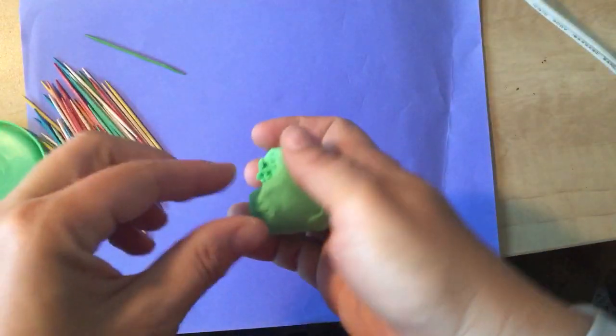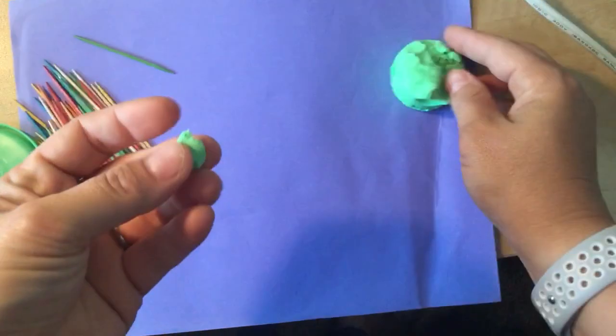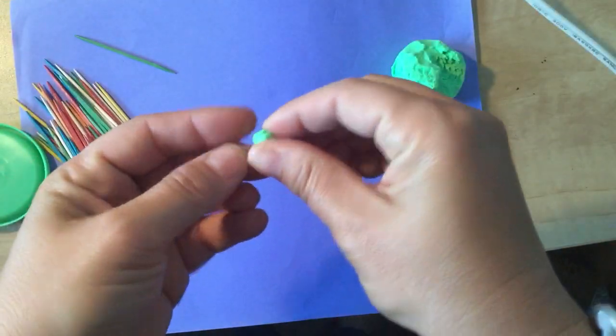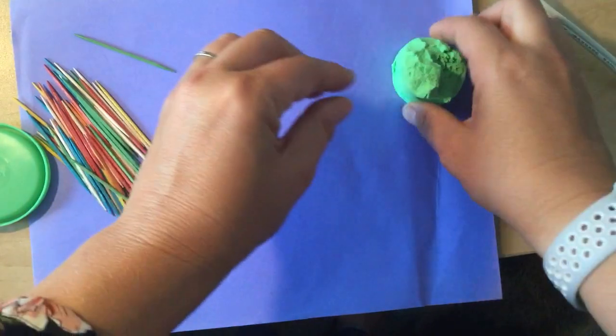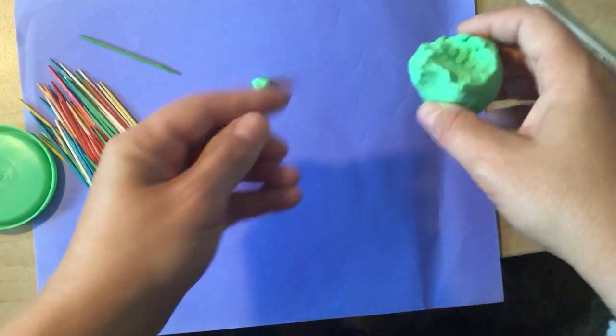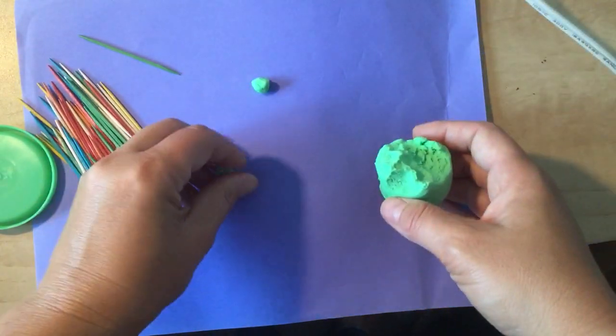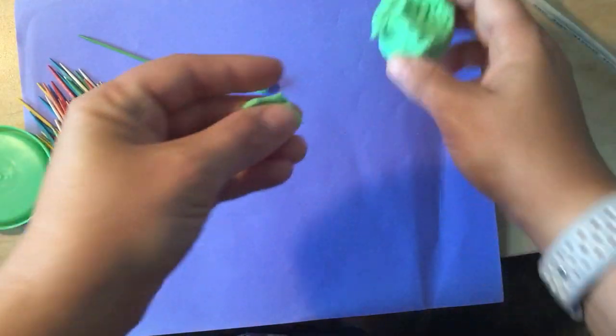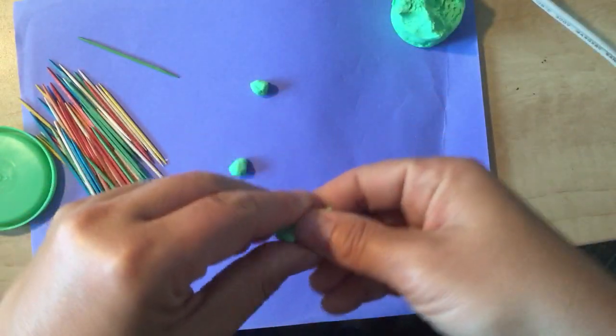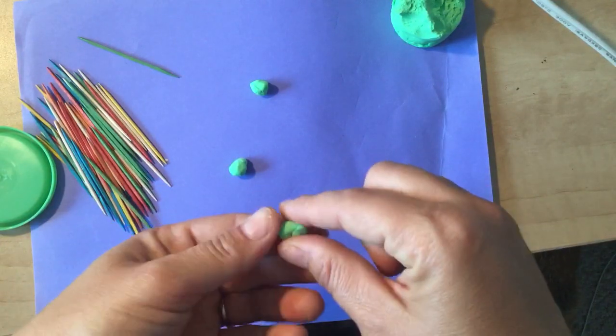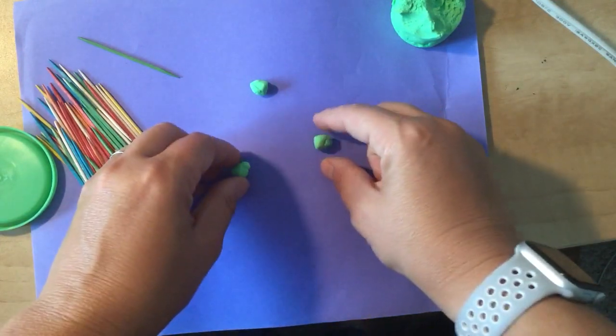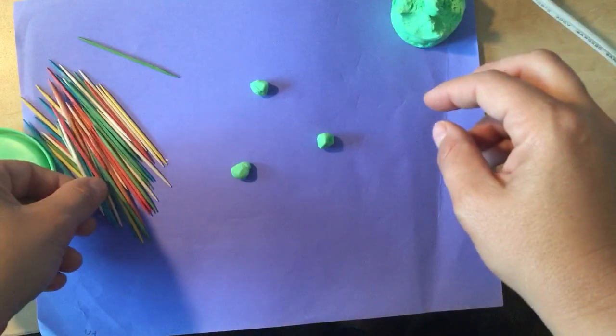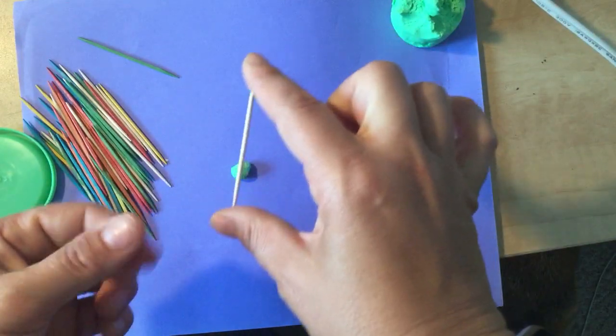And what we're going to do is we're going to use play-doh balls as corners and toothpicks as sides for different shapes. And later on in math when you get older, I mean I can tell you now, they call them polygons. Okay, and so right now we're just going to use these as sides, so all the sides will be equal.